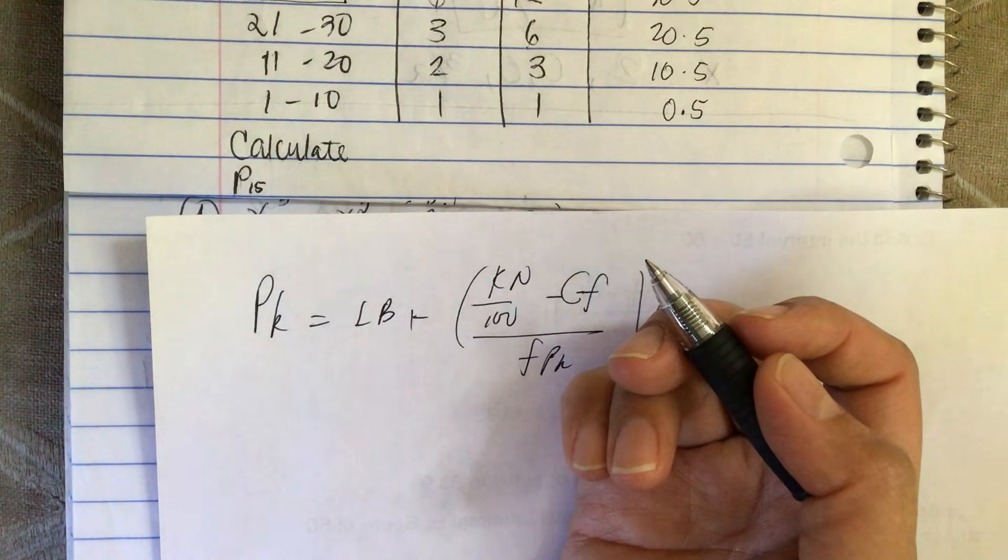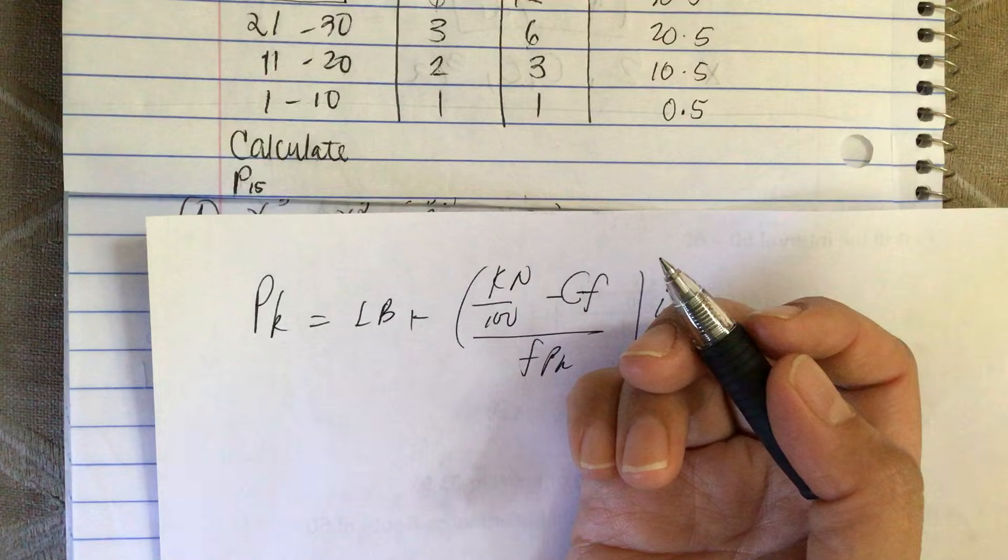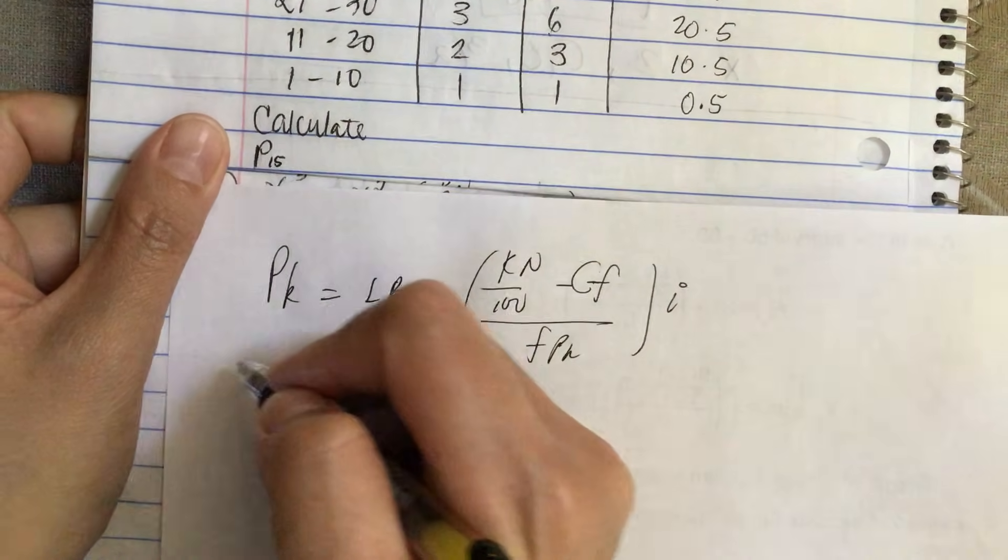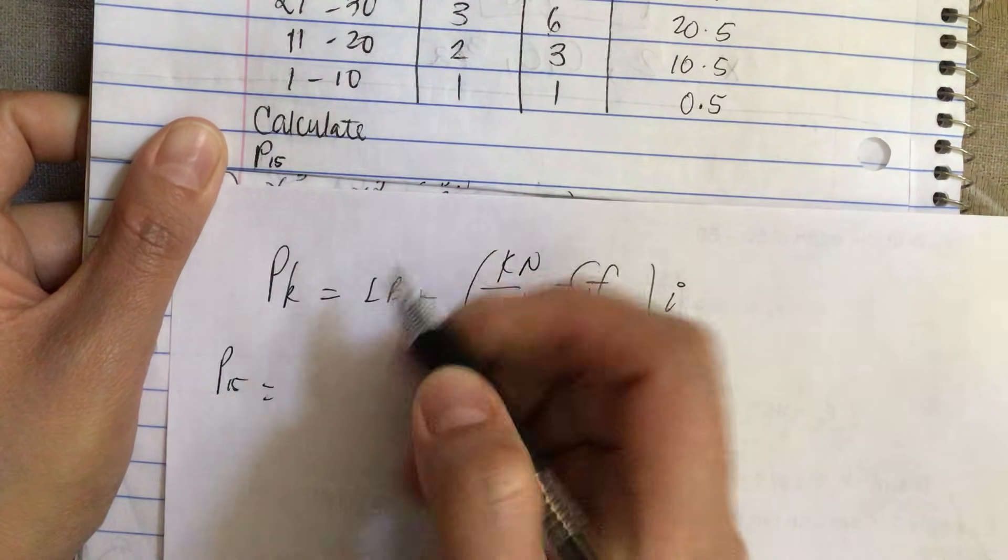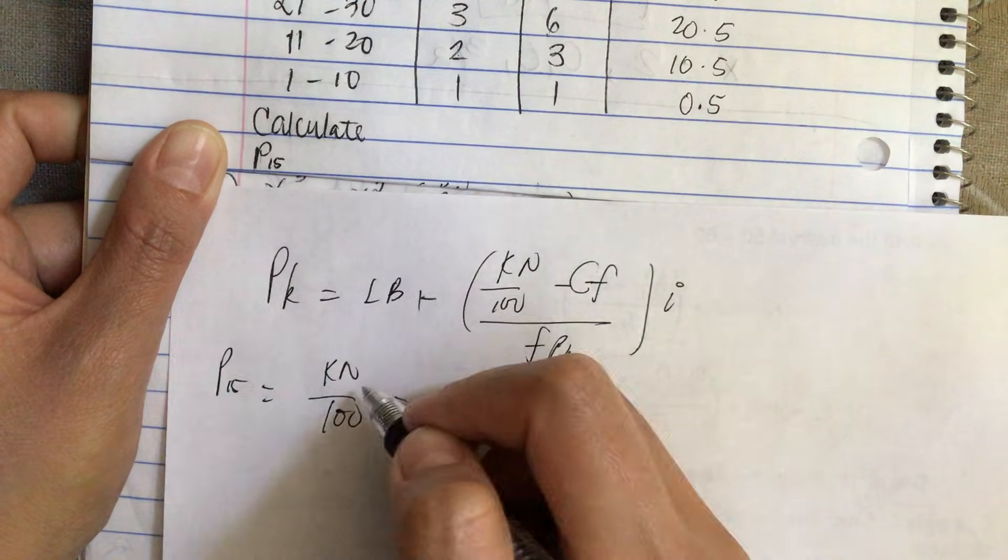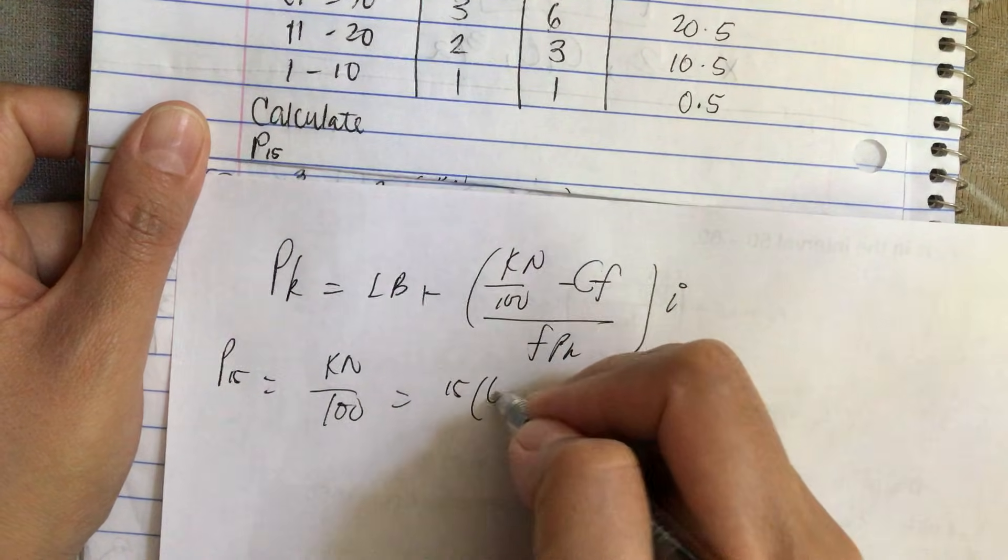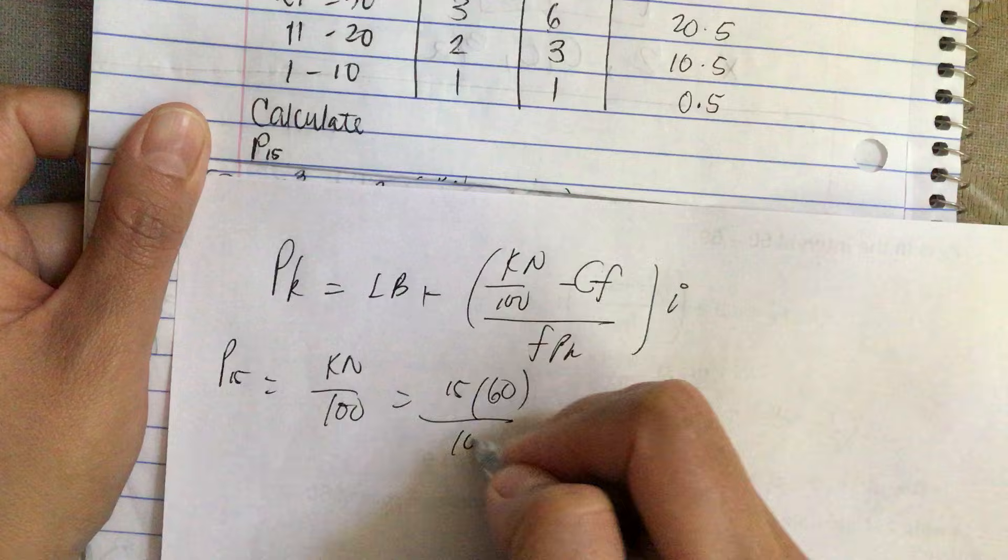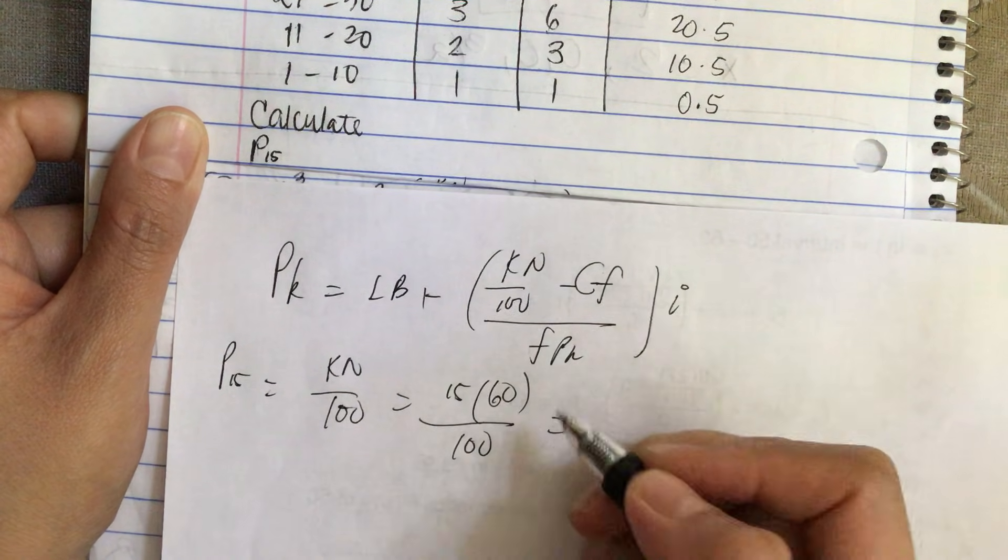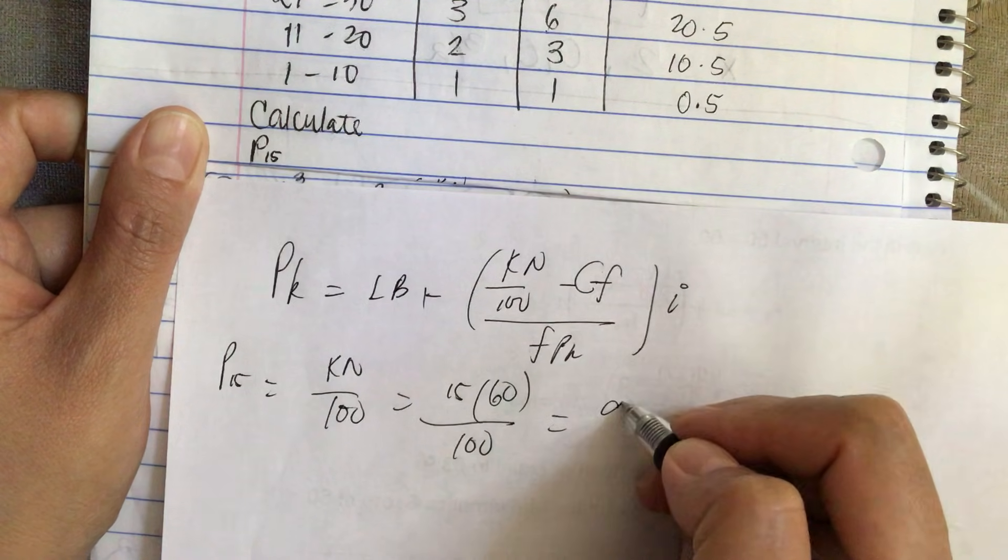First we find the location of P15. So P15 is equal to kn over 100, equals 15 times n (the number of values which is 60) all over 100. And this is equal to 15 times 60, 900 divide 100, it's equal to 9.